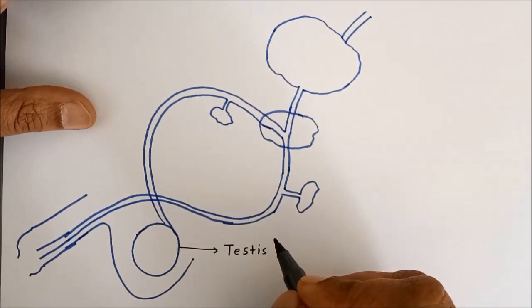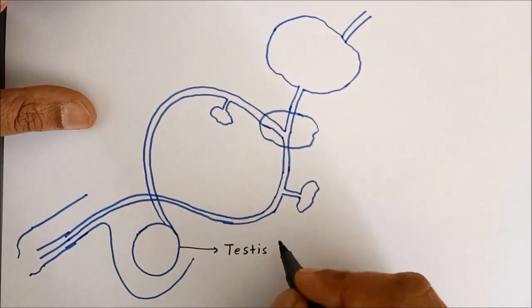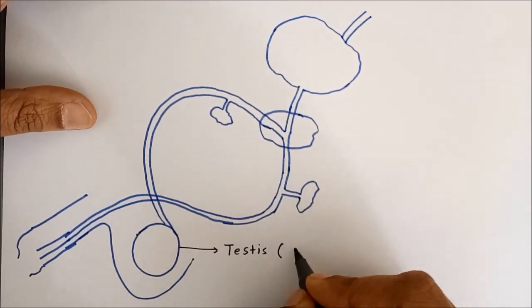Pubic hairs, beard, moustache, everything in males. And testes also produce male gametes called sperms.